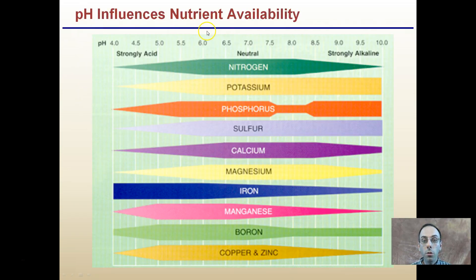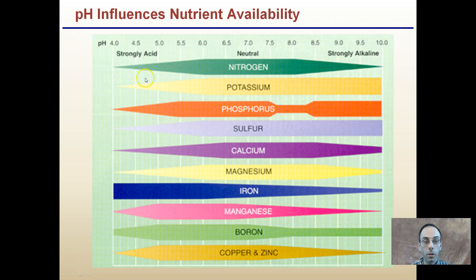pH influences nutrient availability. At a pH of 7, which is neutral, most nutrients in soil are most widely available to plants. As the soil becomes more acidic, nutrients such as nitrogen, potassium, phosphorus, sulfur, and calcium all become less plant-available. The same is true if soil becomes too alkaline — it can also reduce the availability of certain nutrients. Iron is an exception: at a lower pH, it is more plant-available.